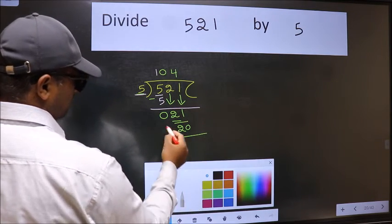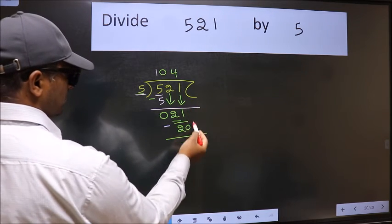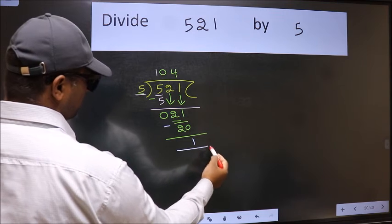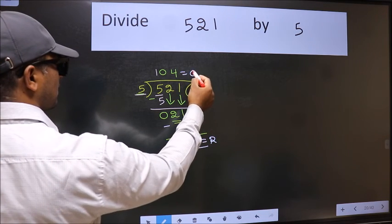Now we should subtract. We get 1. No more numbers to bring down, so we stop here. This is our remainder and this is our quotient.